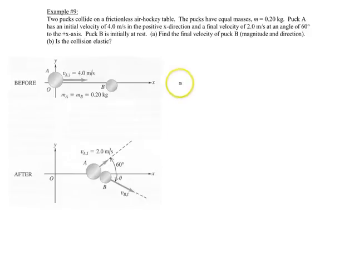Welcome to example nine. We have a collision between two objects on an air hockey table. The reason we're using an air hockey table is so that we don't have any external forces like friction acting on the system, so we can use conservation of momentum.